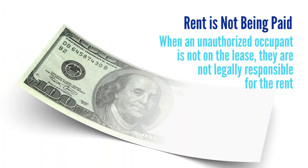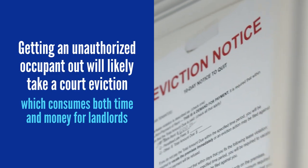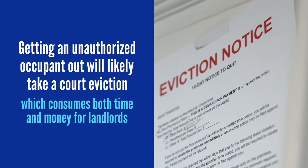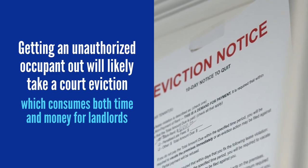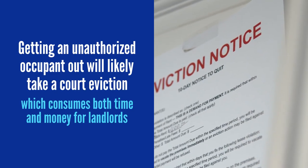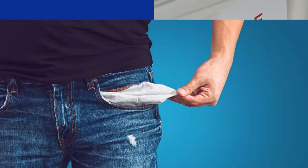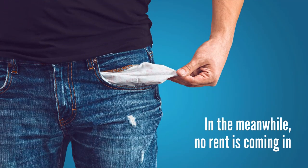Number two, rent is not being paid. When an unauthorized occupant is not on the lease, they are not legally responsible for the rent. Plus, getting an unauthorized occupant out will likely take a court eviction, which consumes both time and money for landlords. In the meantime, no rent is coming in.